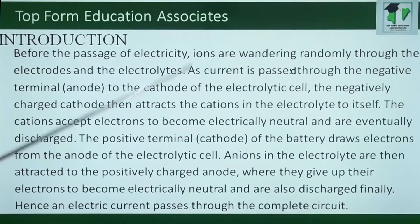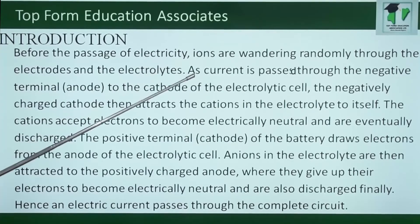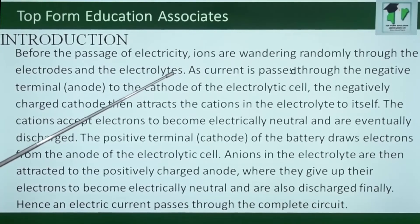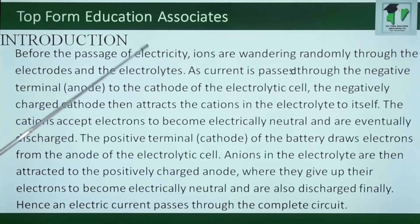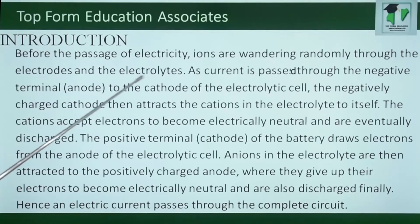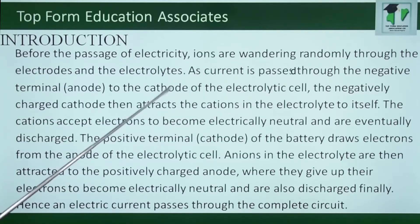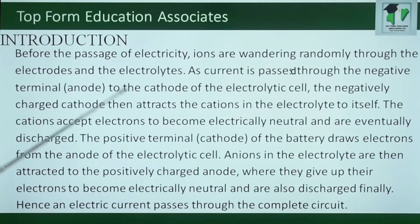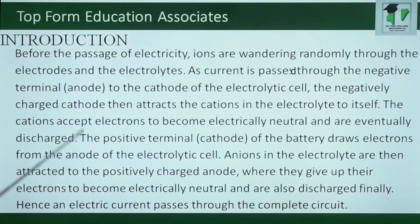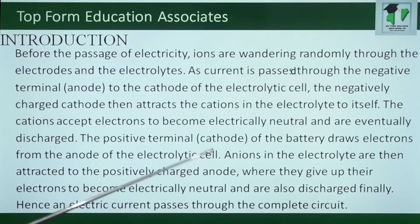Before the passage of electricity, remember electrolysis simply means passing electric currents through a solution of electrolytes for it to be decomposed. Before the passage of electricity, ions are wandering randomly through the electrodes and the electrolytes. As current is passed through the negative terminal, which is the anode to the cathode of the electrolytic cell, the negatively charged cathode then attracts the cations in the electrolyte to itself. The cations are sent electrons to become electrically neutral and are eventually discharged.